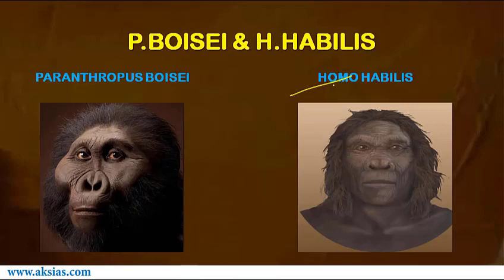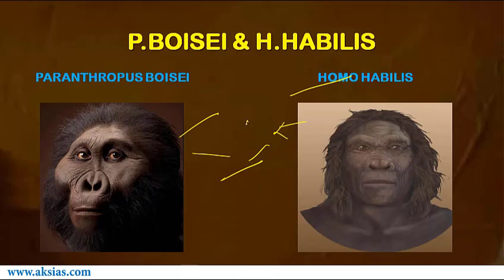Homo habilis lived in East Africa at the same time as Paranthropus boisei, but they occupied different ecological niches and so were not direct competitors. Homo habilis were omnivores while Paranthropus boisei remained strict vegetarians. Regarding the cultural behavior of Homo habilis, they mark the beginning of speech and tools to aid meat eating.